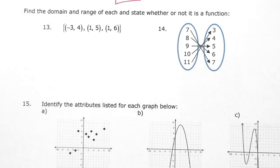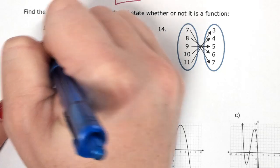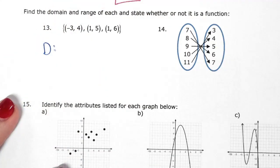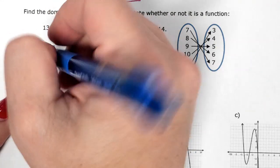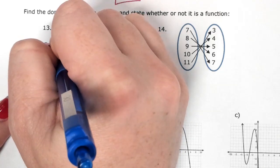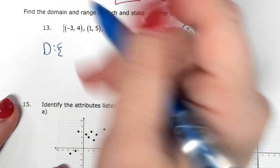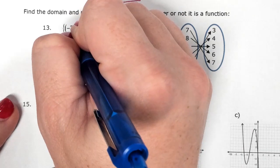13 and 14, find the domain and range of each. So domain is all possible x values. These are both going to be considered lists or discrete because there's no graphs or lines or stories. So domain is x.